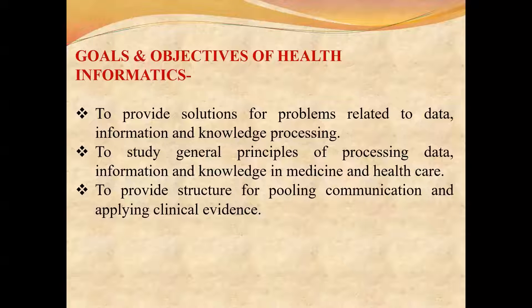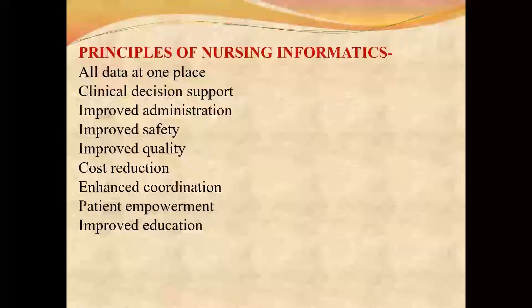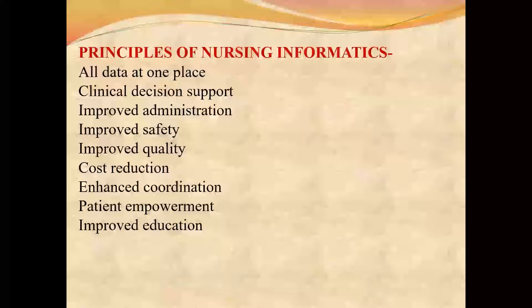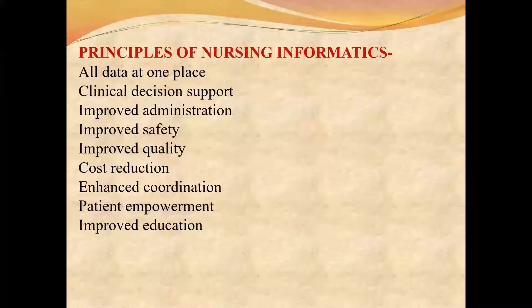The electronic health record contains every detail related to patient health, such as history of particular diseases, treatments the patient has undergone to date, any allergies to drugs or food, family history of any health disorders, etc. The third objective is improved administration.